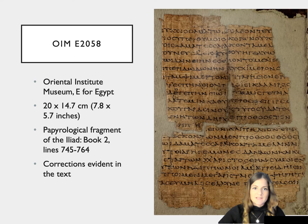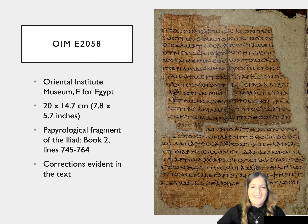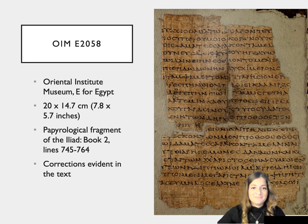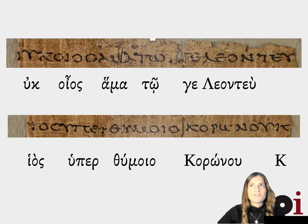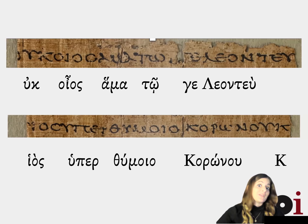There are a few corrections in the text, which we'll be looking at in detail in just a little bit. But the first question arises: how does one even go about figuring out that this is the Iliad? When a papyrologist is confronted with such a text, our very first hope is actually that the literary fragment is the Iliad, if only because it makes it that much easier to identify. But first we have to read it.